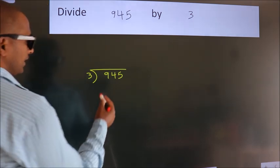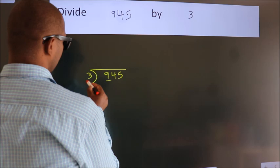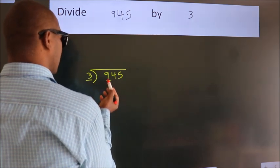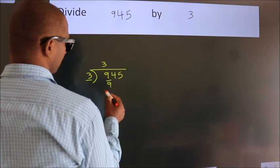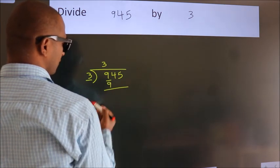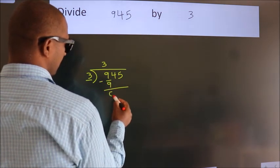Next, here we have 9. Here 3. When do we get 9 in the 3 table? 3 times 3 is 9. Now we should subtract. We get 0.